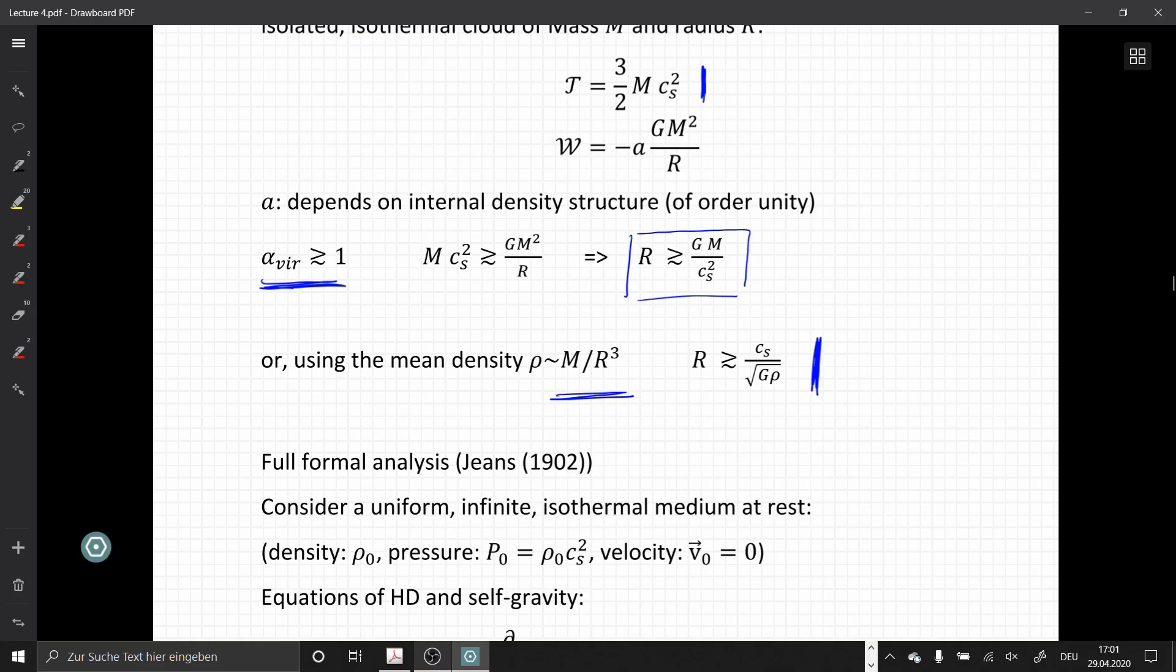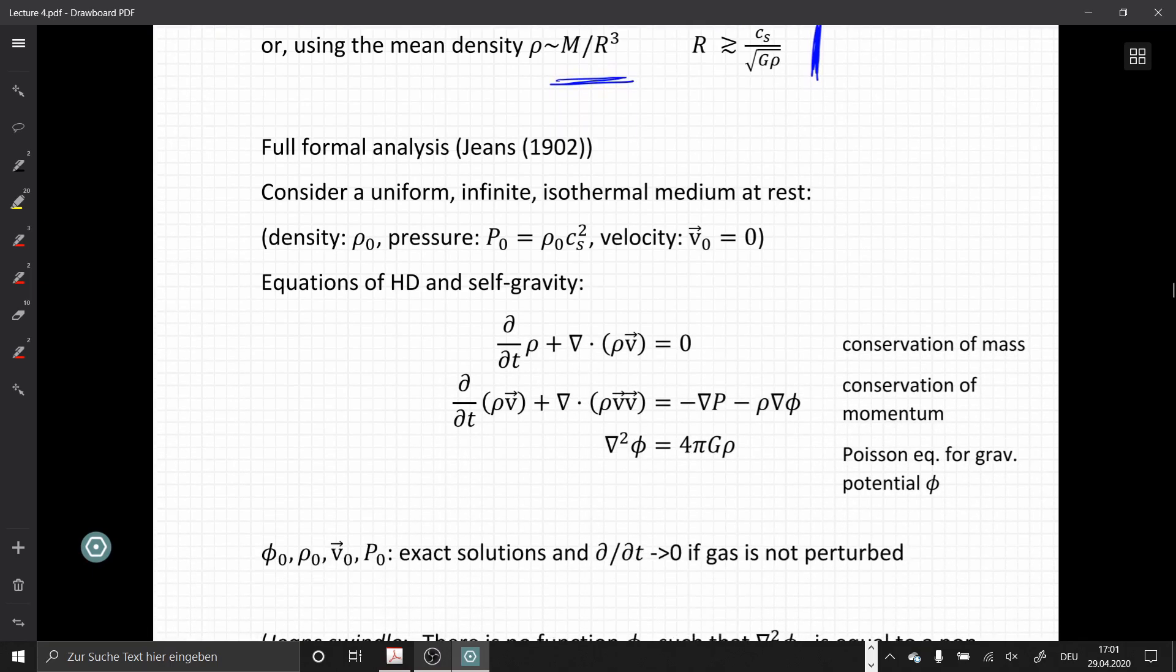With this in mind, we can now look at the full analysis presented by Jeans. Consider a uniform infinite isothermal medium at rest with density ρ₀, pressure P₀ equal to ρ₀Cs², and velocity field V₀ equals zero. We write down our HD equations: the continuity equation, conservation of momentum, and the Poisson equation to compute the gravitational potential from the density distribution.